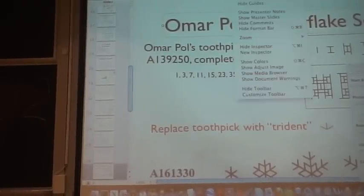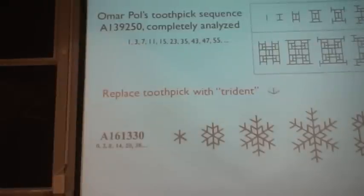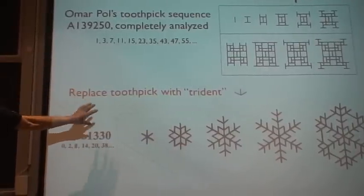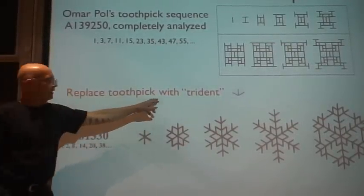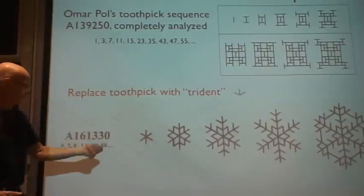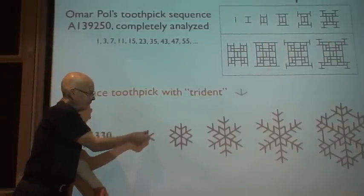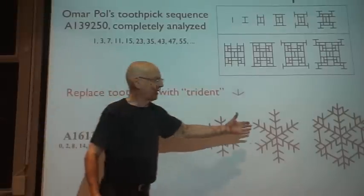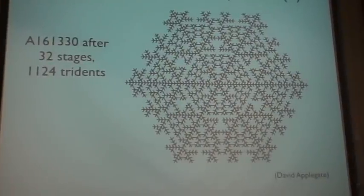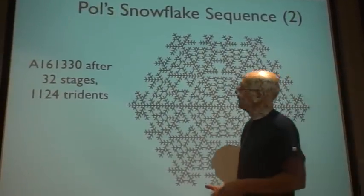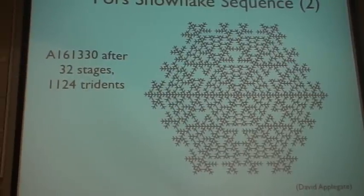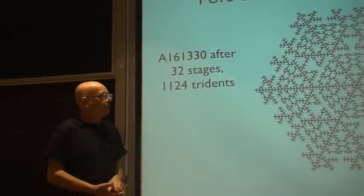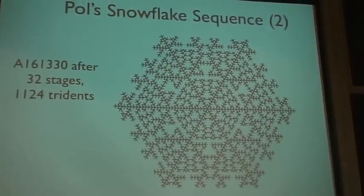So let me return to the main talk. So here's a new sequence. So the basic toothpick sequence we understand fully. This one is, instead of toothpicks, we use three-pronged toothpicks. So it looks like this. They're like a bird's footprint. And you start off with two of them back to back. So here are two tridents back to back. That's stage one of the iteration. And then at each free end, you add one of these. And it looks like that. And after you get to 32 generations, it looks like this. So this is appropriate for the Christmas season. After 32 generations, you have 1,124 of these two tridents. And the sequence is, how many do we have after n generations? And the answer is, we don't know.